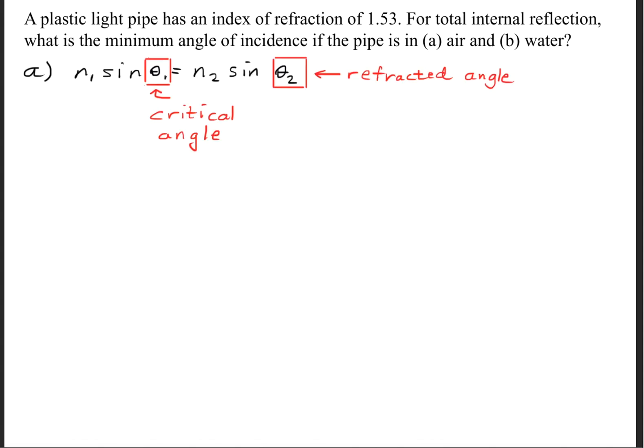For total internal reflection, we just change it ever so slightly. We call theta 1 the critical angle. The critical angle is simply the minimum angle of incidence that'll cause the refracted angle to be 90 degrees.